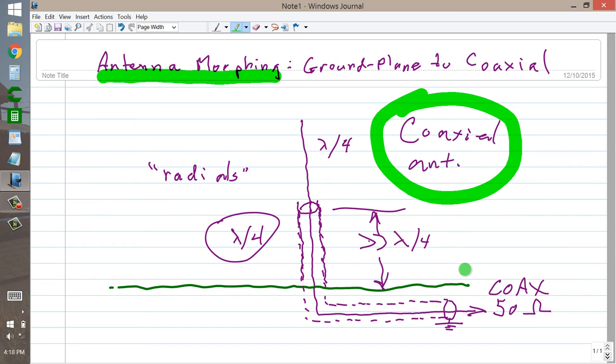And it has a purely resistive impedance of approximately 73 ohms at the feed point, or twice the original 37 ohms that we had when the radials were horizontal, and the same 73 ohms that you would get with a half wave dipole antenna.